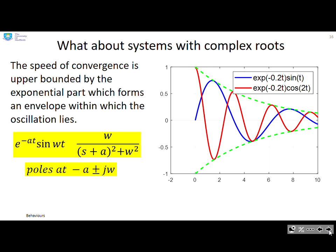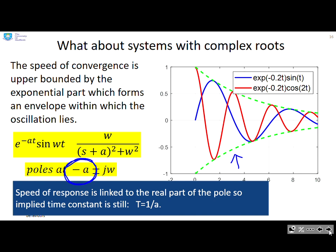What about systems with complex roots? The speed of convergence is upper bounded by the exponential part, which forms an envelope within which the oscillation lies, and you can see that on the figure here. This green dotted line is the envelope given by the exponential. If you look at the poles of your exponential times sine, you can see this envelope is actually governed by the real part of the pole, this e to the minus at. So the speed of response is linked to the real part of the pole, and the implied time constant is t equals one over a.